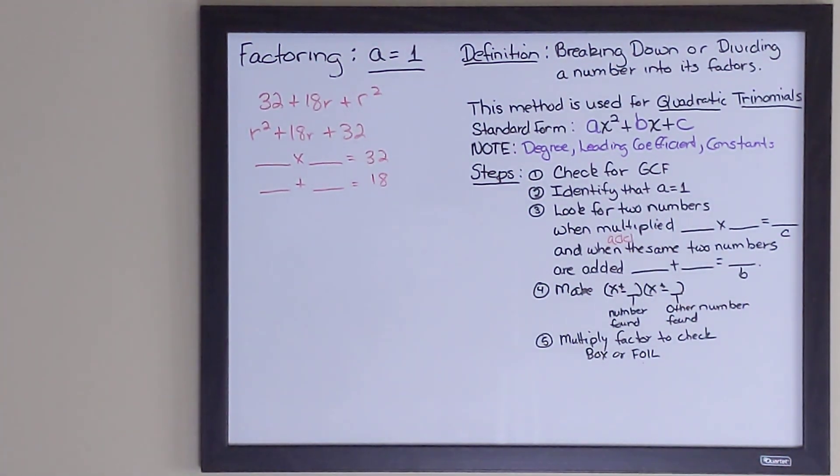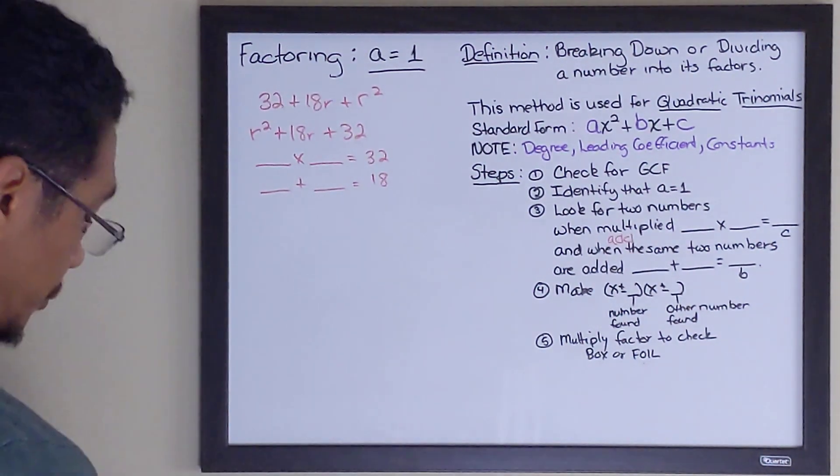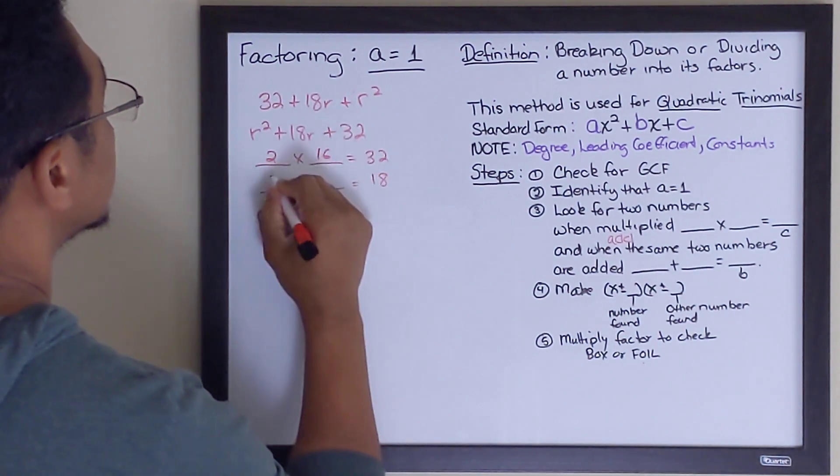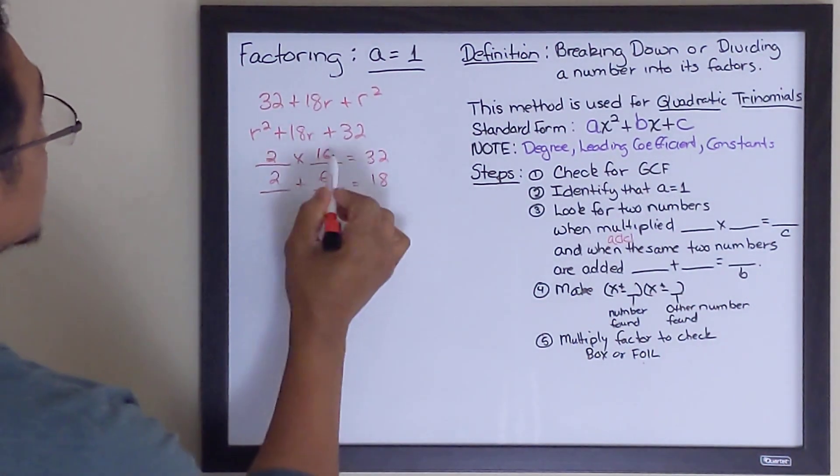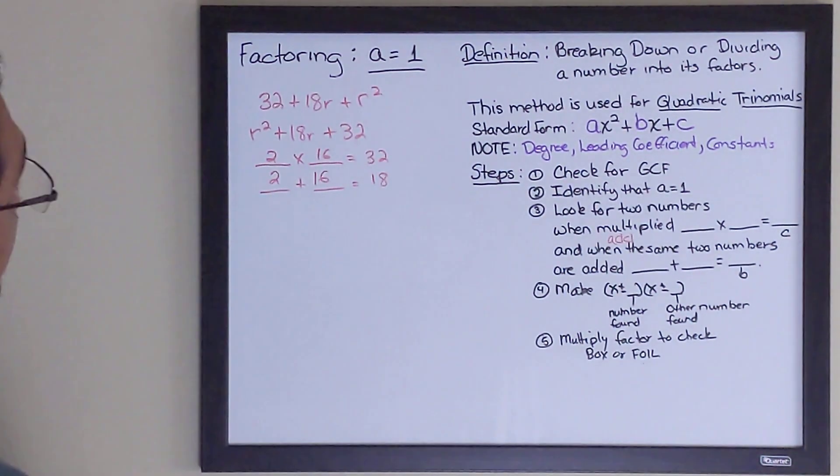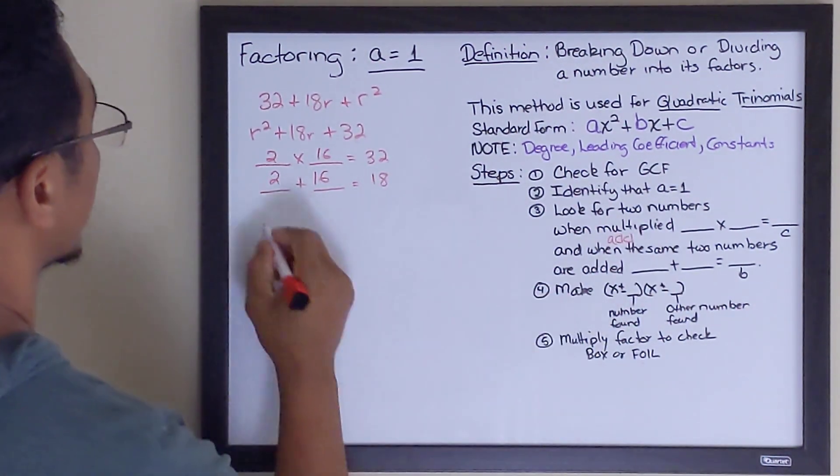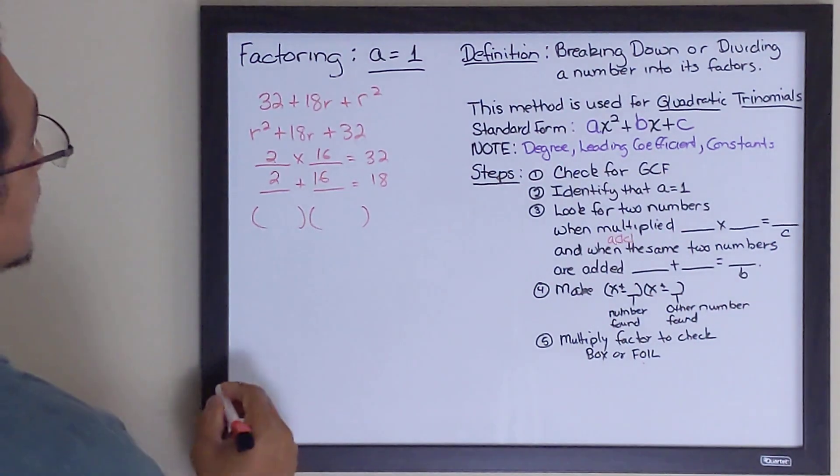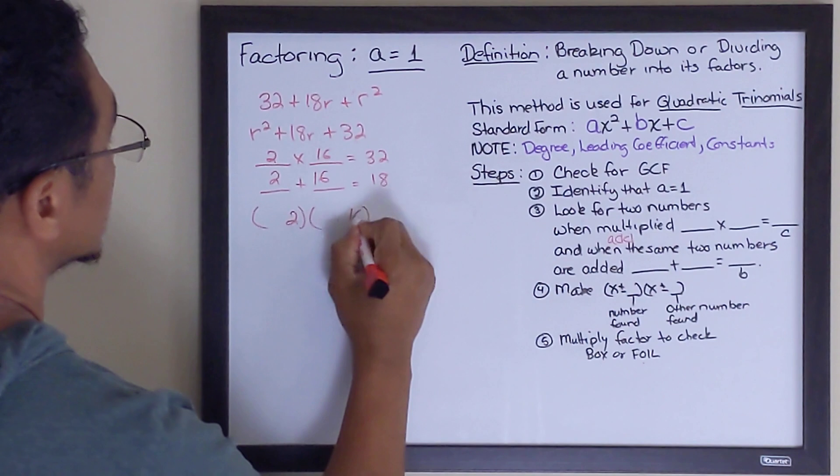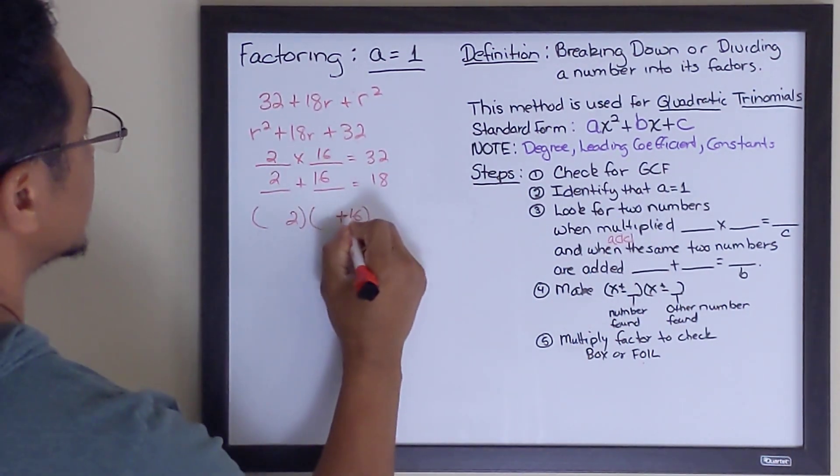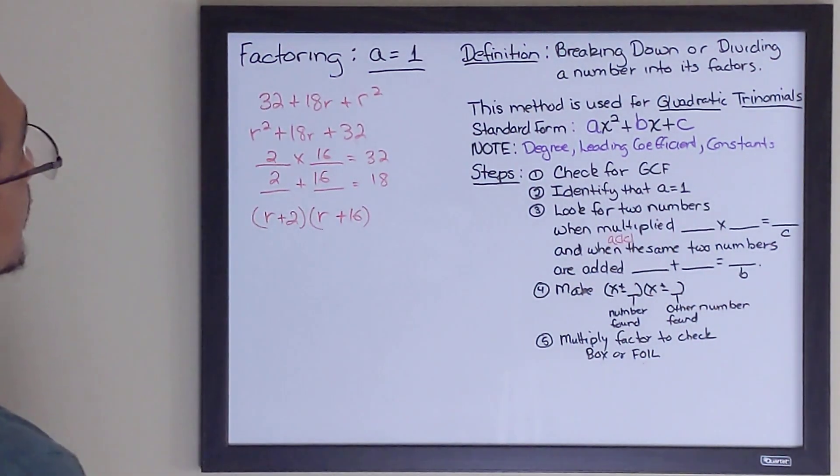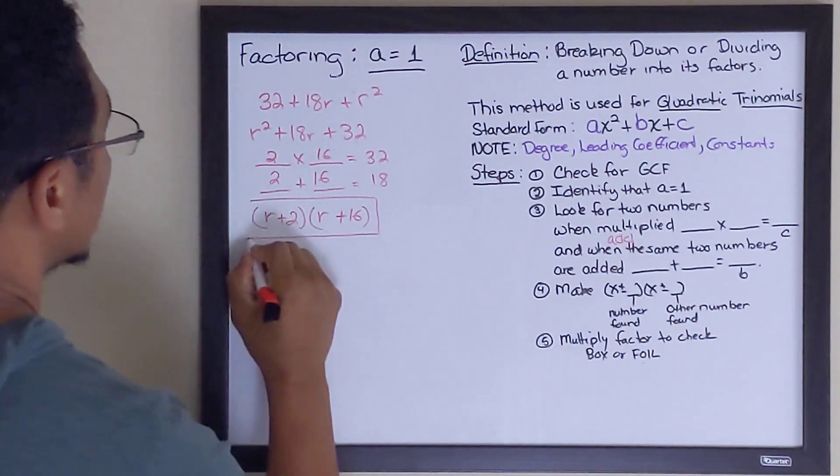Now, what are my two numbers? Through trial and error, you might take a little time to find those two numbers. It's going to be 2 and 16. Well, let's check that. 2 times 16 is 32. 2 plus 16 is 18. And then we go to our fourth step. We create our parentheses. We put our two numbers in there, which is 2 and 16. And they're both positive, so we put plus on both of them. And then we use the variable, which is r, that is being used in the problem.